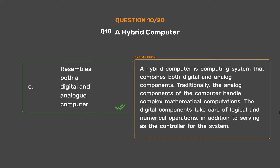A hybrid computer is a computing system that combines both digital and analog components. Traditionally, the analog components handle complex mathematical computations, while the digital components take care of logical and numerical operations, in addition to serving as the controller for the system.